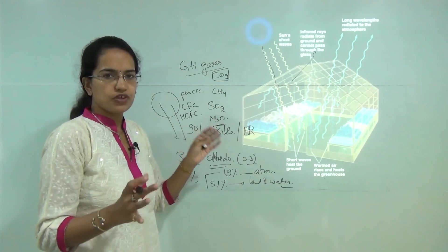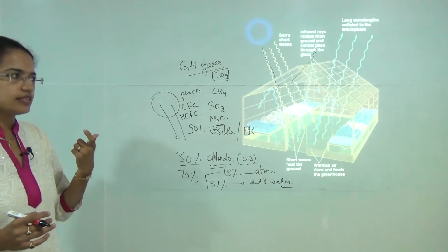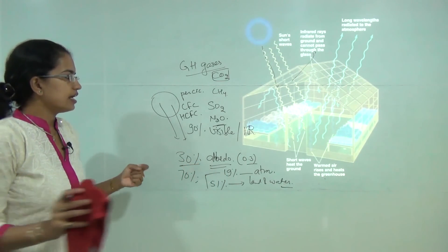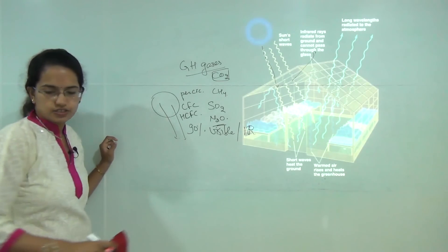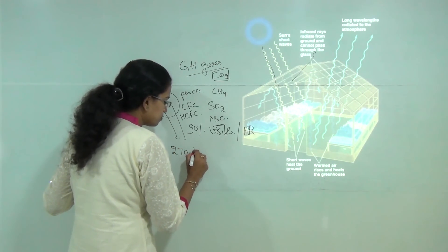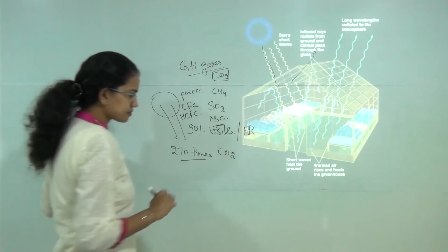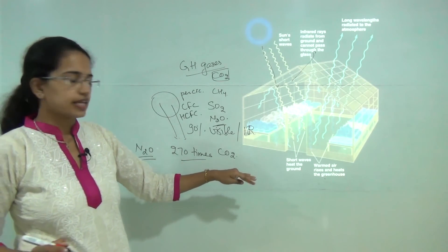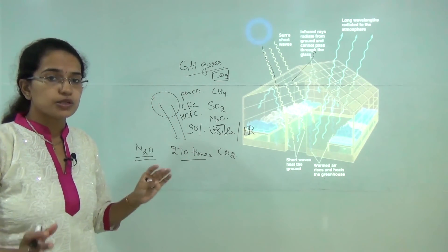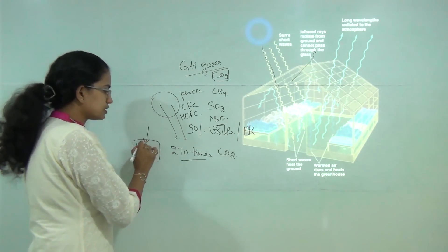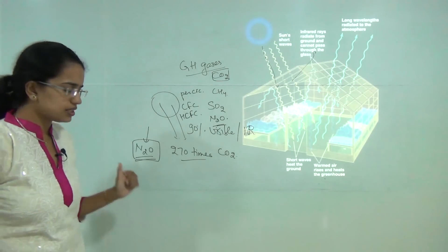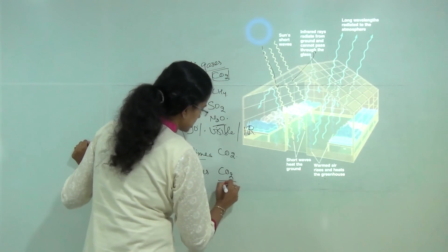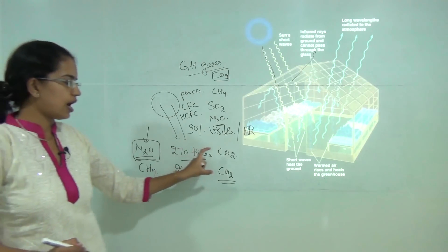Different compounds have different ability to absorb heat. Comparatively, nitrous oxide absorbs around 270 times more heat than carbon dioxide. That means if we are trying to curb pollution, we must curb nitrogen compounds first, then move to carbon dioxide. The next major gas is methane, which has an absorption capacity of nearly 21 times that of carbon dioxide.